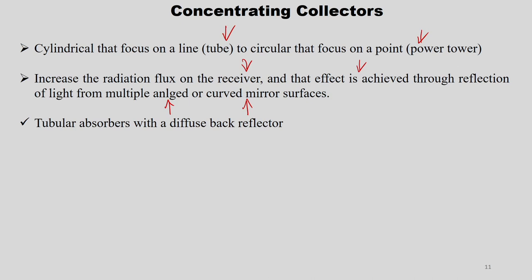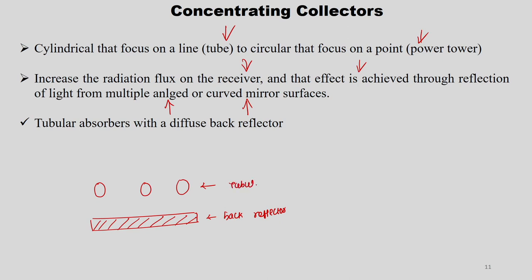The first type is tubular absorbers with a diffuse back reflector. The design has a tubular absorber with one back reflector behind it. Solar radiation directly hits the absorber surface, and radiation that hits the reflector is reflected back to the absorber.